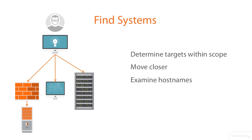The assigned host names that an organization uses can reveal a lot of information about their internal operations. Most large organizations have a standard host naming convention that is used to quickly identify a system. They may use characters in specific positions that indicate the operating system, architecture, purpose, and physical location. They may even include an application name as well. Figuring out the naming scheme makes finding important systems easier.